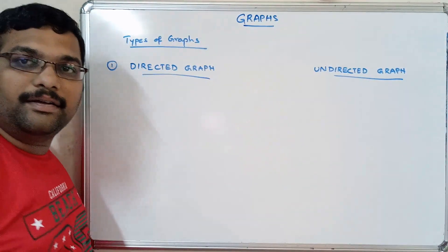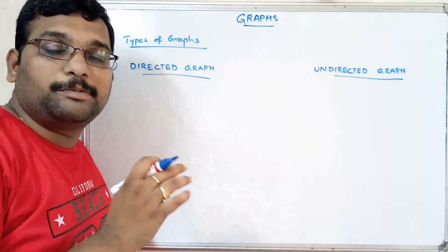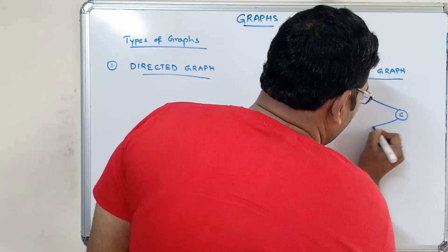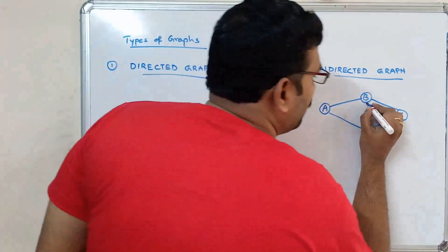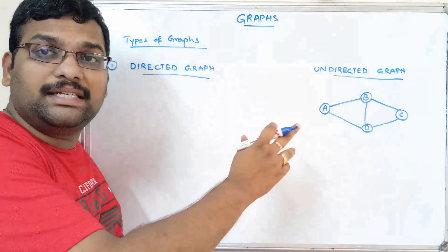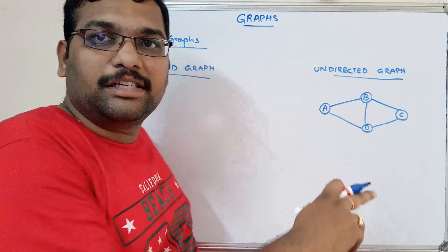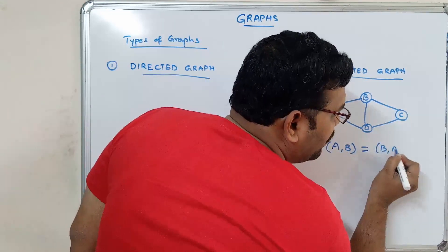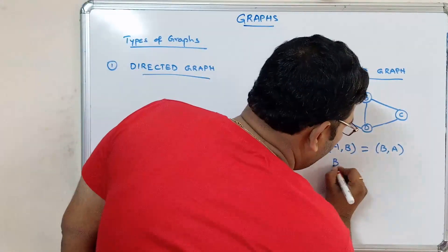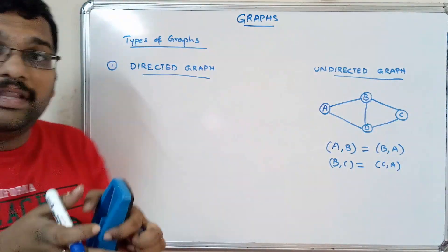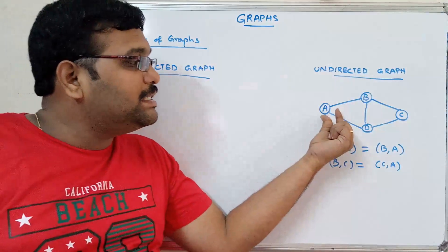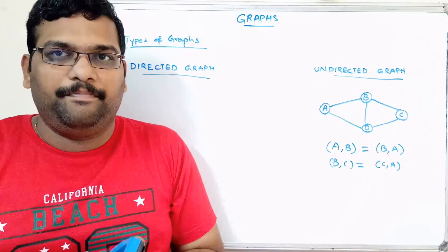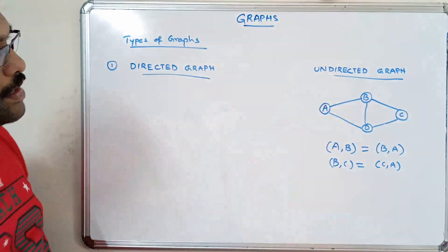In an undirected graph, there are no directions specified on the edges. For example, with nodes A, B, C, and D — we can travel from A to B or from B to A. So A comma B is equal to B comma A, and B comma C is equal to C comma B. We can travel in both directions, making it bidirectional.